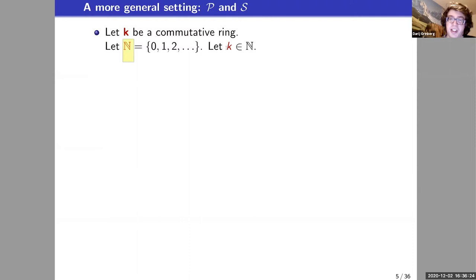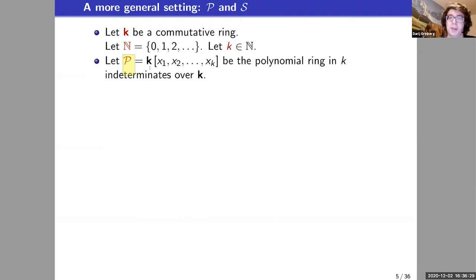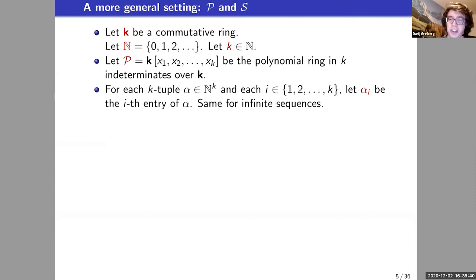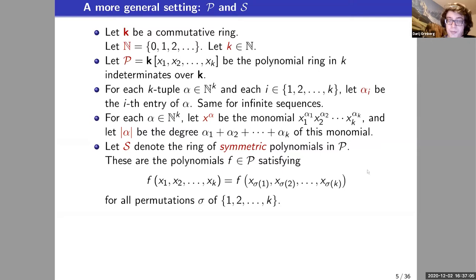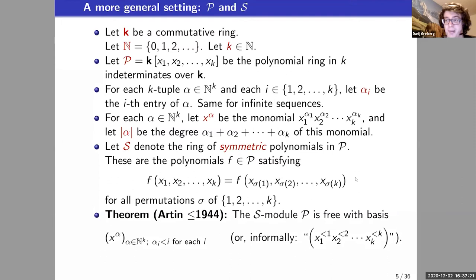We start with a commutative ring k; n is a non-negative integer; k is a fixed non-negative integer. P is the polynomial ring in k variables over the base ring. Standard notation: if alpha is a tuple, x to the alpha means the monomial x_1^{alpha_1} x_2^{alpha_2} and so on, and the degree is the sum of the entries. A symmetric polynomial is a polynomial invariant under permuting the variables; I call the set of symmetric polynomials S, which is a subring of P. A classical theorem states that all polynomials form a free module over the symmetric polynomials, with a basis of sub-staircase monomials: x_1^{<1} x_2^{<2} ... x_k^{<k}, giving k! monomials total.